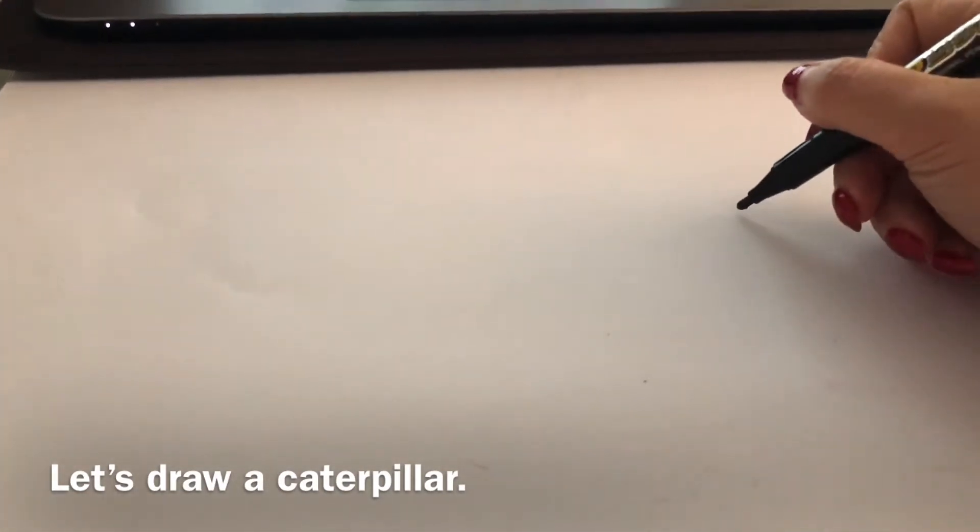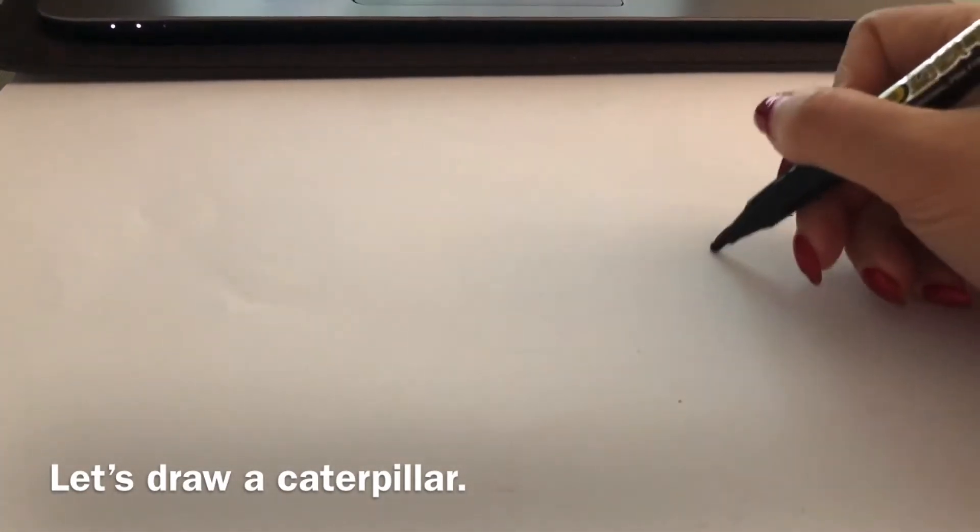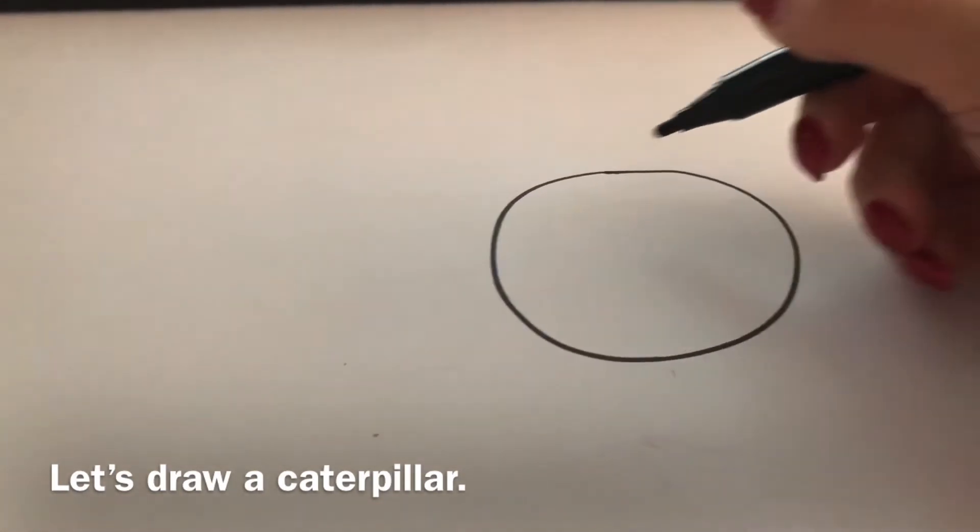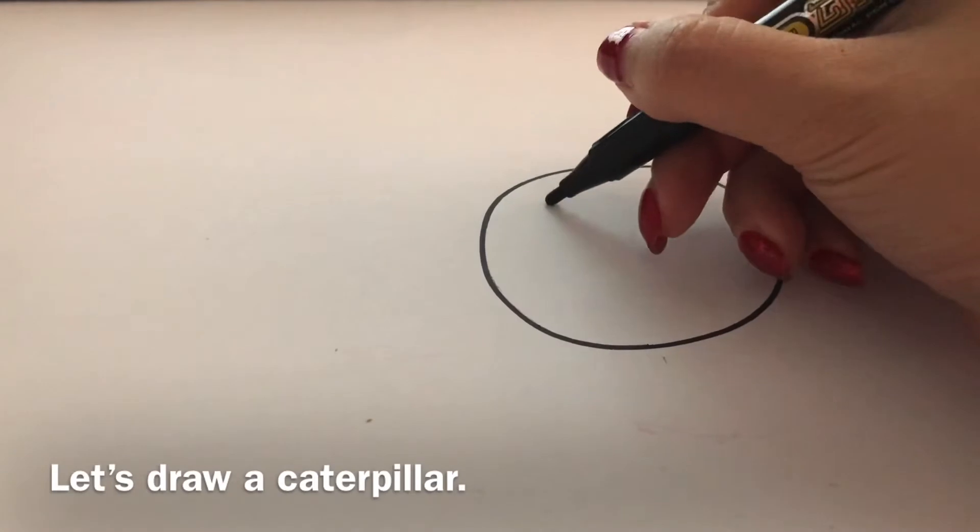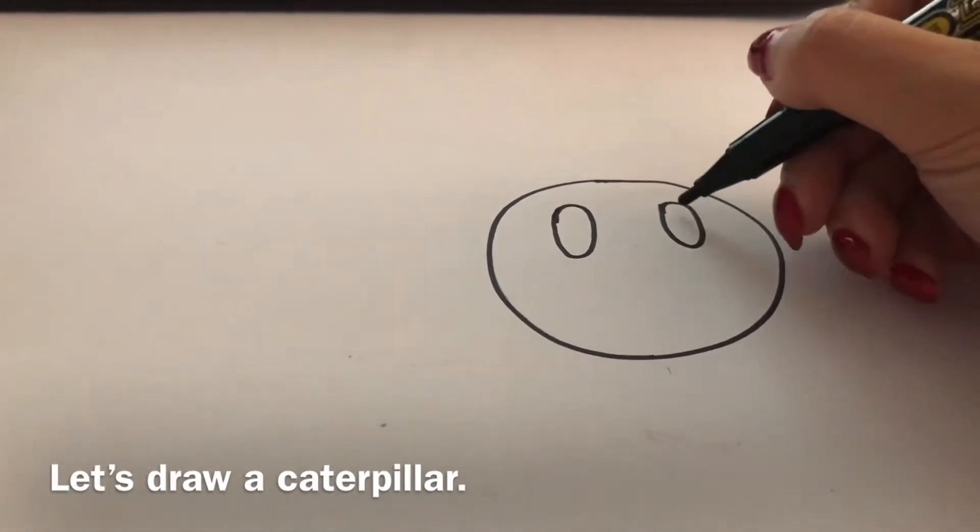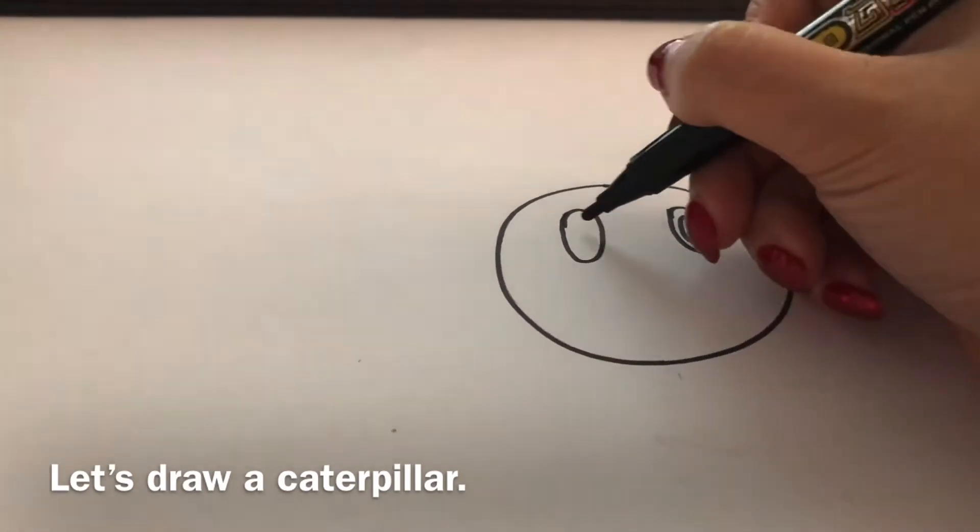we're going to make a circle. This is for the caterpillar's head, and let's make another one like this for the eyes and mouth.